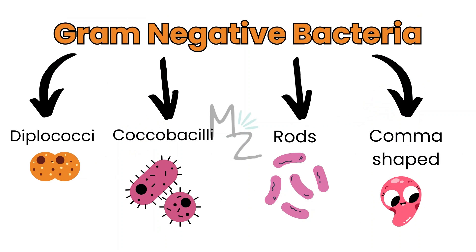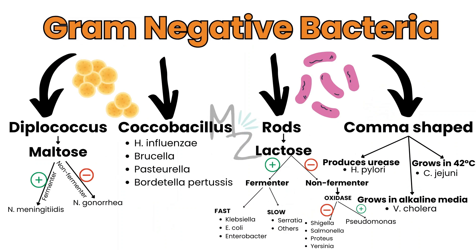Gram-negative bacteria are also classified by shape into diplococci, coccobacilli, rods, and comma-shaped. Diplococci are subdivided based on maltose fermentation: if a bacterium ferments maltose it's Neisseria meningitidis, and if it doesn't it's Neisseria gonorrhoeae. Coccobacilli include Haemophilus influenzae, Brucella, Pasteurella, Bordetella, and Proteus.